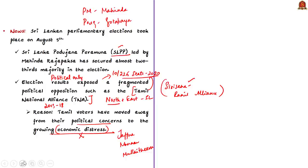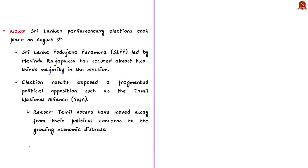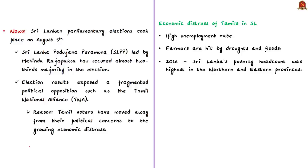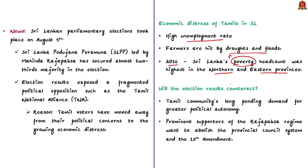In this context, the author briefly mentions the economic grievances of the north and east of Sri Lanka — the unemployment rate is high and farmers are hit by droughts and floods. As of 2016, Sri Lanka's poverty hit count was highest in the northern and eastern provinces. The shift in the voting pattern indicates the need for urgent economic relief. The author feels that the election results might affect the Tamil community's long-pending demand for greater political autonomy, i.e., political devolution.